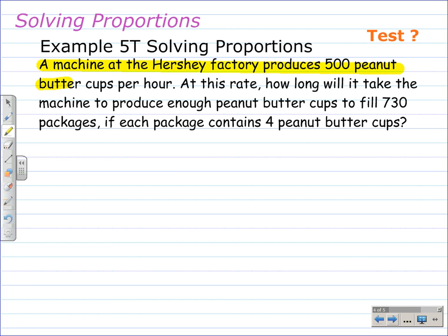A machine at Hershey produces 500 peanut butter cups per hour. We can write that as a rate. That sentence gives us a rate or a ratio that we can write. And that ratio would be how many peanut butter cups are produced in how many hours. And we are given this ratio that 500 peanut butter cups are made per hour. So that's a unit rate where we have 500 peanut butter cups in one hour.